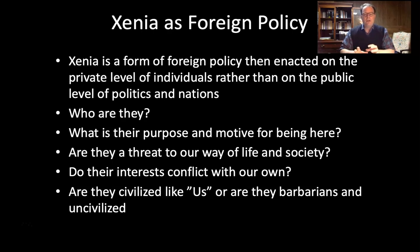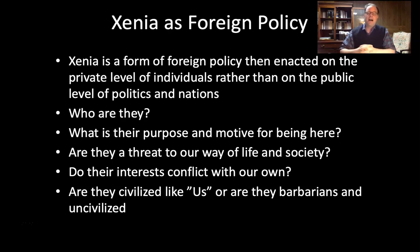In this relationship with the foreigner, Xenia turns out to be a type of foreign policy enacted not on the level of nations in diplomacy, but with individuals coming from far-off lands. It raises the question: who are they? What is their purpose and motive for being there? Are they a threat to our way of life? Are they civilized like us or are they barbarians? The funny irony of Odysseus's arrival on the island of the Phaeacians is that on one hand he is a hero of great virtue and carries himself with great dignity. Nonetheless, he is a convict on the run from Poseidon, and the Phaeacians ultimately get punished by Poseidon for harboring a convict — something like the sanctuary city of today.